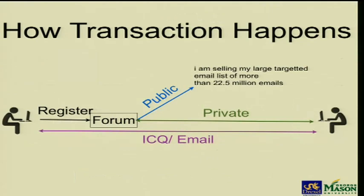Typically, this is how a transaction happens in these networks. These forums are usually closed doors — you have to register to interact with people. A person interested in buying or selling something would register and post a message like this one I took from a forum post: the person had 22.5 million emails and was interested in selling them. After publicly announcing what they want to sell, people interested in buying would contact them via private messages. They can do the whole transaction in private messages inside the forum, or exchange ICQ and email addresses and do the transaction outside. So public messages are mostly for advertising, and private messages are where most conversation and transactions happen.